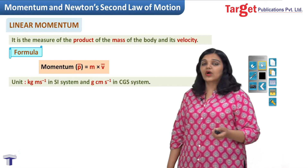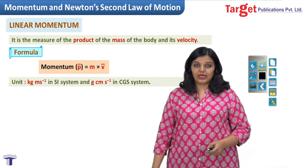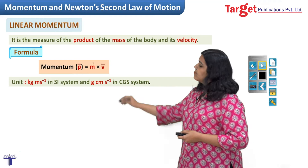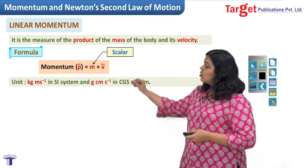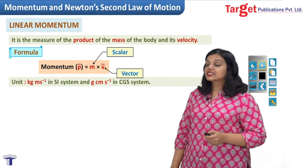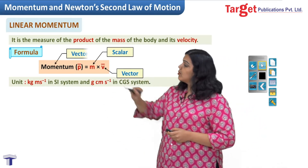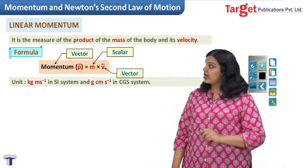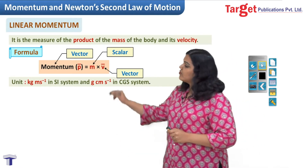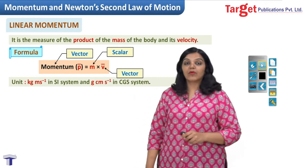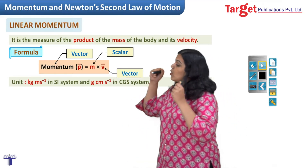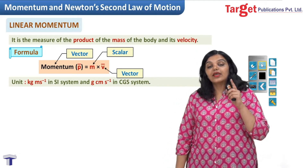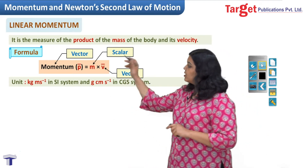The next question is: what kind of quantity is momentum? Looking at the formula, mass is a scalar and velocity is a vector, which makes momentum also a vector, because it is the product of a scalar and a vector. So we have answered both the units of momentum and its nature as a quantity. Now let's make one more observation about this formula.